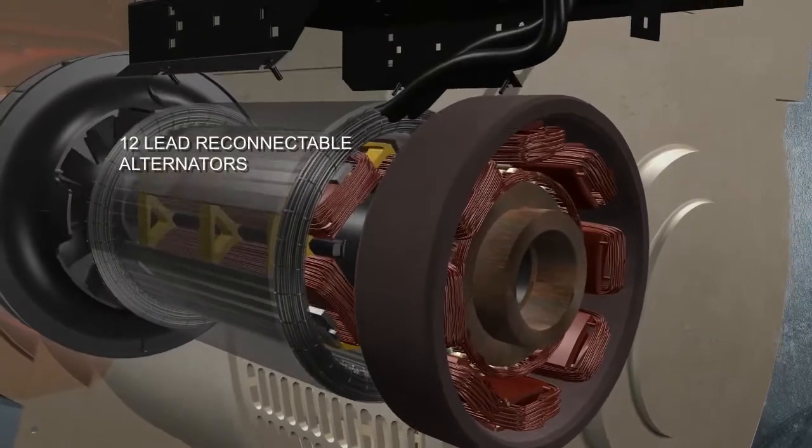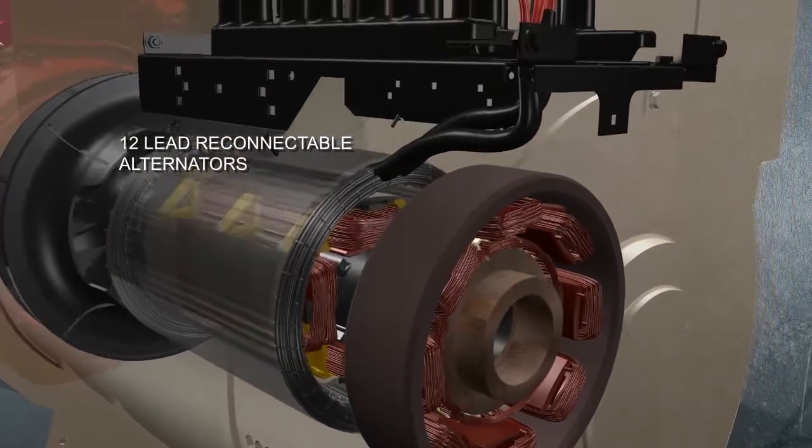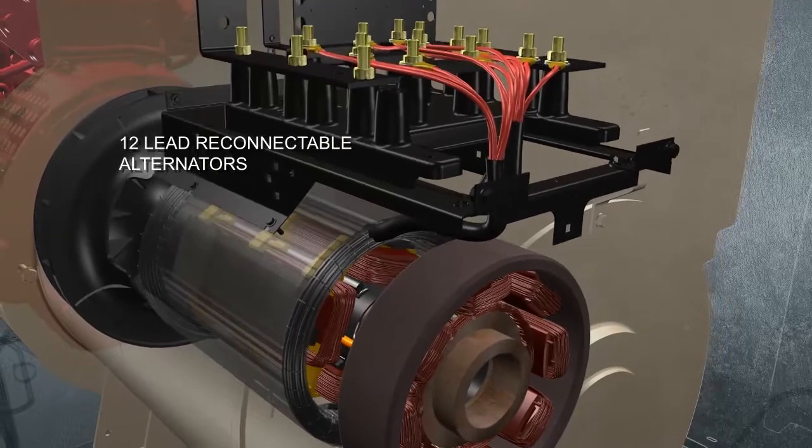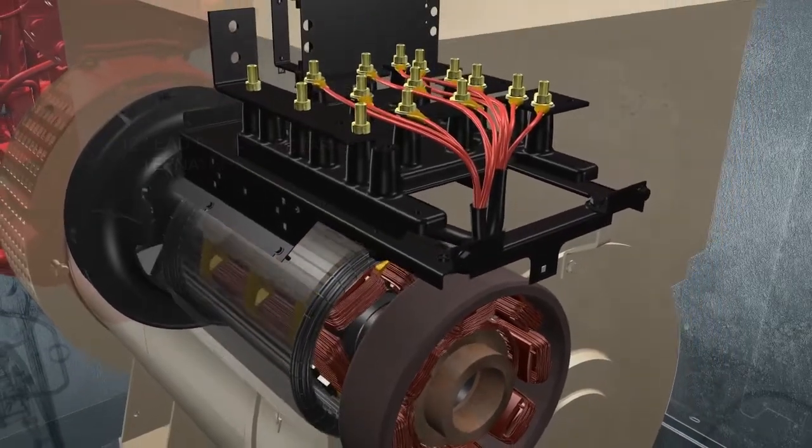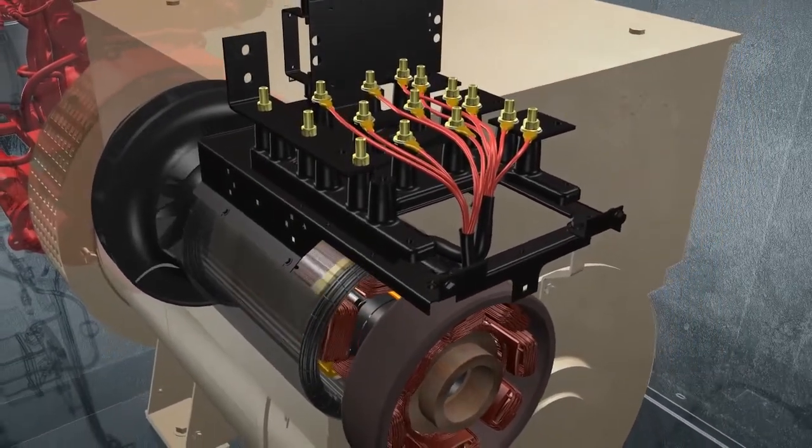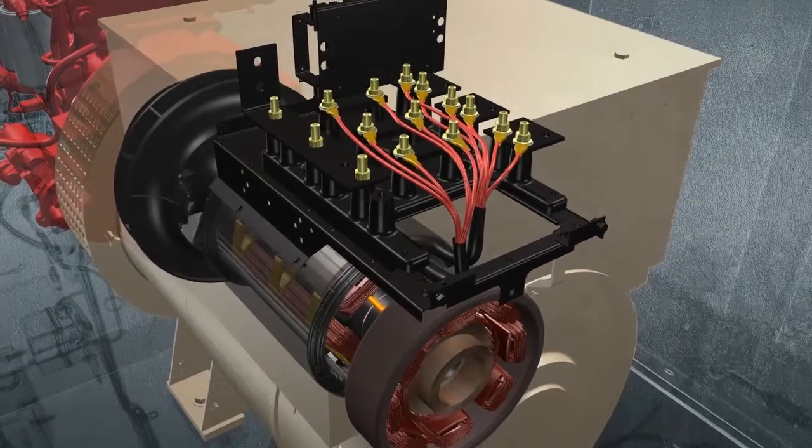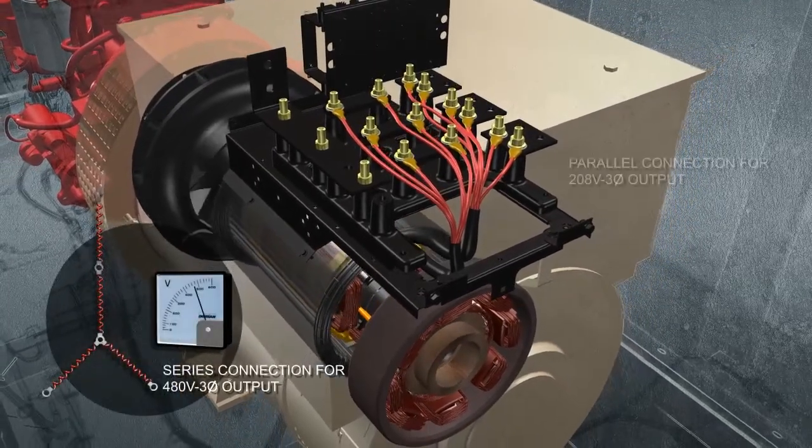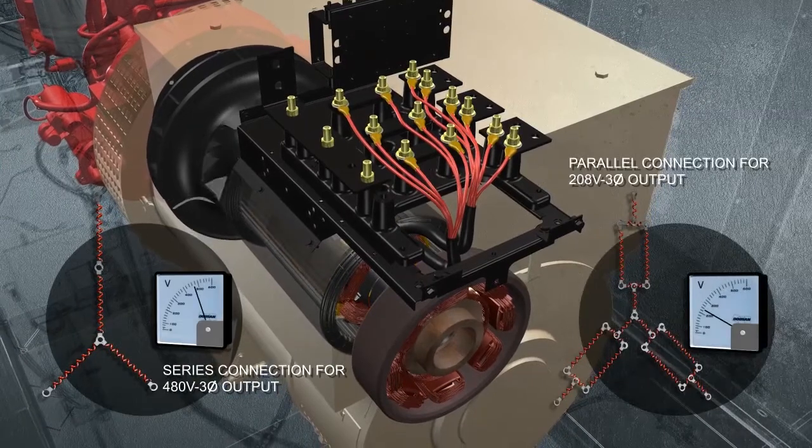Doosan Mobile Generators also include alternators with six coils wound into the stator. This provides three voltage sources, or phases. Because each phase combines two coils of wire, the sources can be connected in series for high voltage applications, or in parallel for low voltage needs.